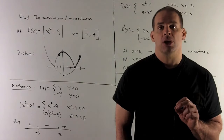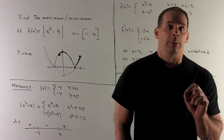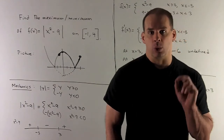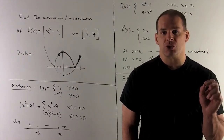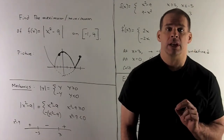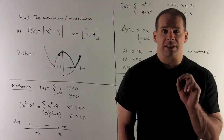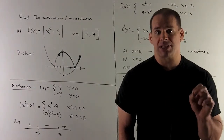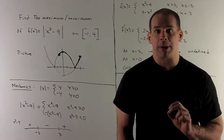We're going to reproduce that algebraically by working around the absolute value sign. We need a definition of absolute value: if y ≥ 0, absolute value of y is just y. If y is negative, we multiply by -1, because minus times minus gives a positive.